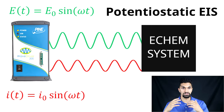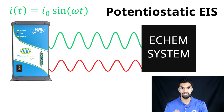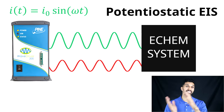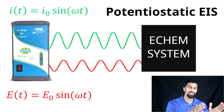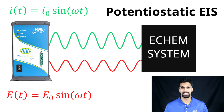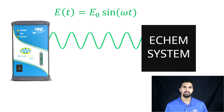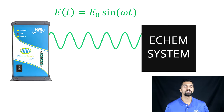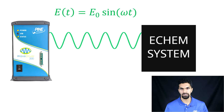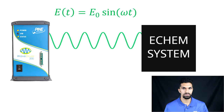For example, if you were applying a sinusoidal current and then measuring a sinusoidal potential, that would be referred to as galvanostatic EIS. The sinusoidal potential that we are applying has several attributes.